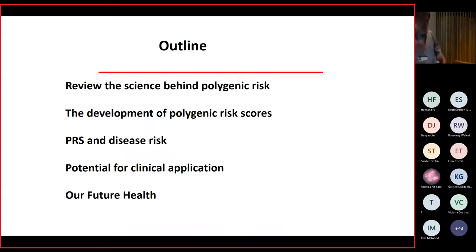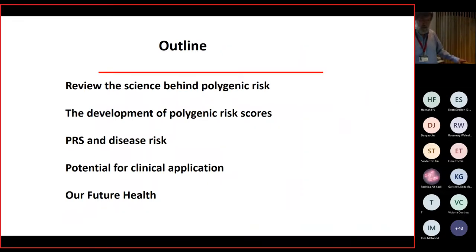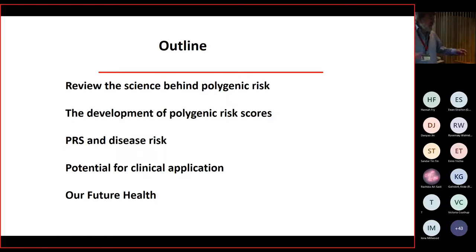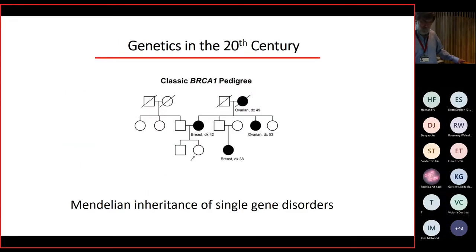I'd like to quickly review the science behind polygenic risk, how we develop polygenic risk scores, look at a few examples of PRS and disease, consider the potential for clinical application, and end with some very preliminary information about a new major cohort that we're running in the United Kingdom.